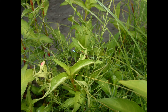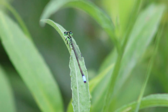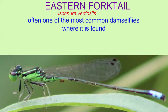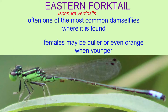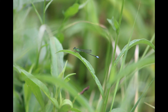The top of the head is typically black and the thorax typically has black and pigmented stripes. The Eastern forktail species is often one of the most common species of damselfly in the area where it is found. Females may have a duller coloration, or some may even be orange when they are younger.